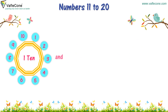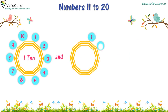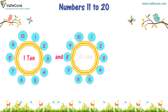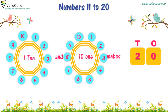10 and 1, 2, 3, 4, 5, 6, 7, 8, 9, 10 — 10 and 1 makes 2, 0 — 20.